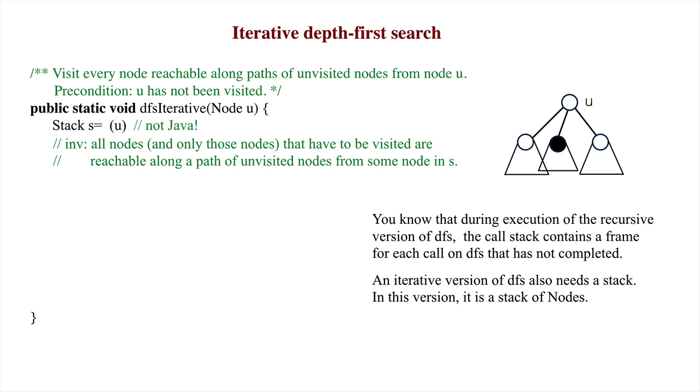From the method spec, we see that the invariant is truthified by starting with a stack that contains node U. If S is empty, then by the invariant, all nodes that have to be visited have been visited. In the body of the loop, we first pop the top element from the stack and store it in U. We could have used a fresh local variable instead, but there is no need for that since the initial value of parameter U is not needed any longer.